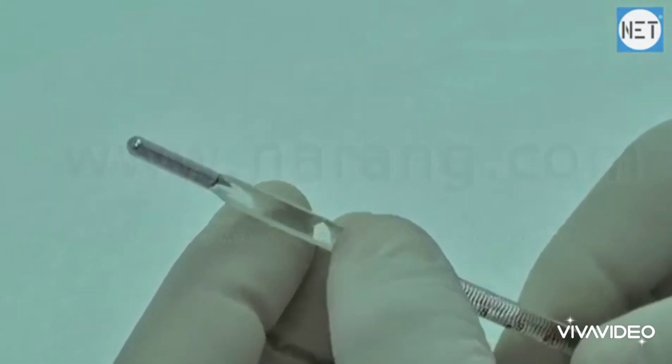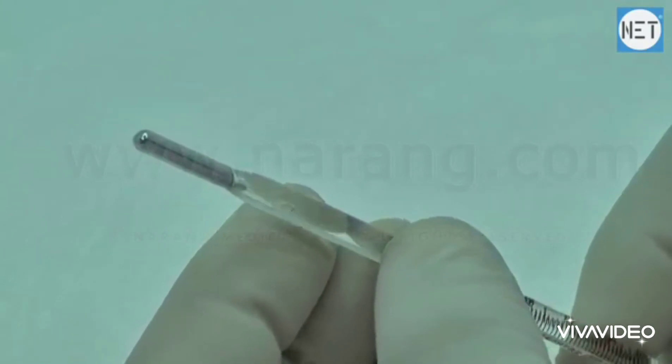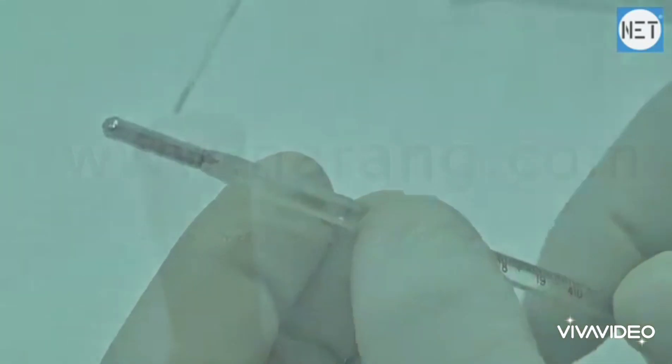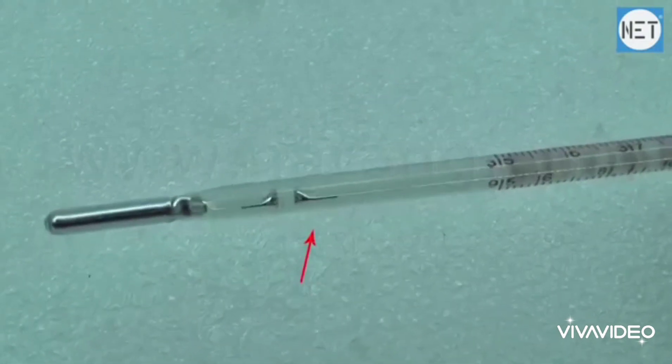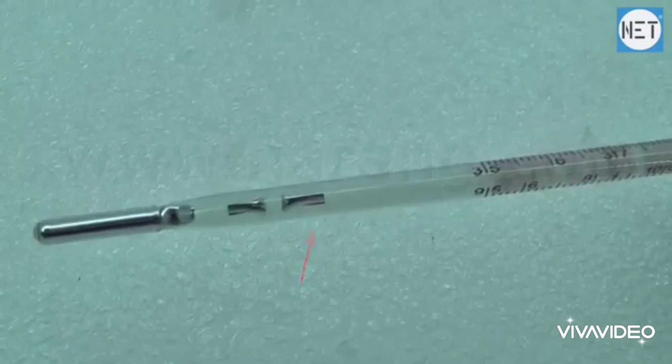Now let's see how to measure the temperature of a body with the help of a thermometer. The bulb of the thermometer is kept in contact with the body. The mercury rises in the capillary. Wait for some time.